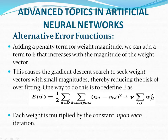The first alternative is adding a penalty term for weight magnitude. We can add a term to E that increases with the magnitude of the weight vector. This causes weight vectors with small magnitudes, thereby reducing overfitting. The error function used in the back propagation algorithm is the summation over all output units of the difference between the target output and the network output, squared.